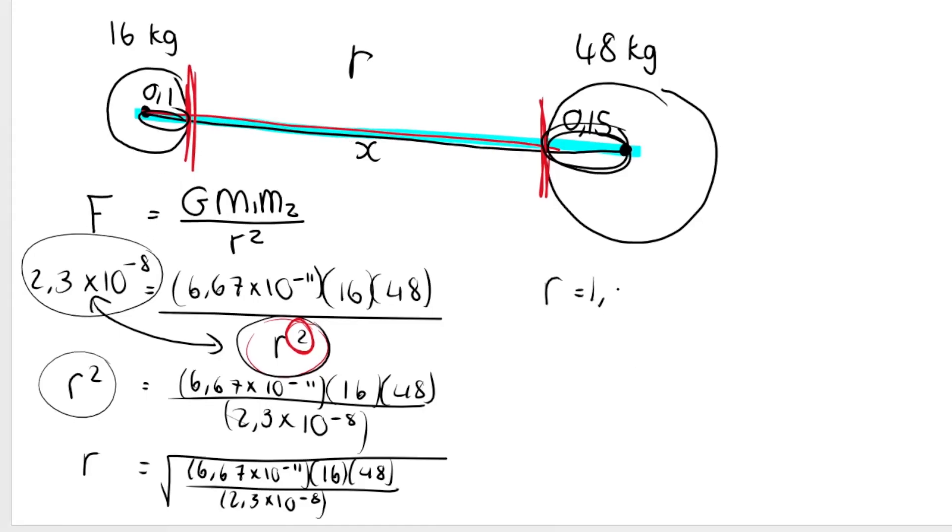I get R is equal to 1.4923806 dot dot dot. Take note how I'm not rounding off yet because we're not at the end of the question. Never ever round off unless you're right at the end of the question.